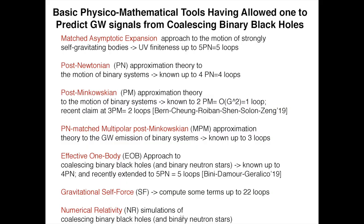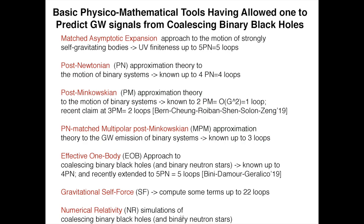Many tools of physics and mathematics have been used to predict gravitational wave signals from coalescing binary black holes. I will mention just a few: matched asymptotic expansion methods, post-Newtonian approximation — meaning non-relativistic expansion beyond Newton in powers of v/c or v²/c² — which has been pushed up to four loops in QFT language. Recently, post-Minkowski approximation theory has become important. There is also computation of wave emission by matching multipolar post-Minkowski and post-Newtonian, the effective one-body approach, and numerical relativity combined with analytical methods.